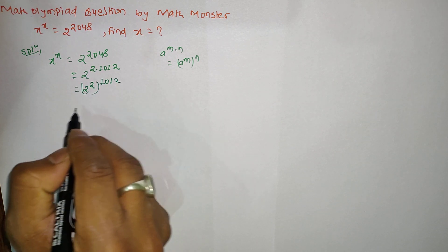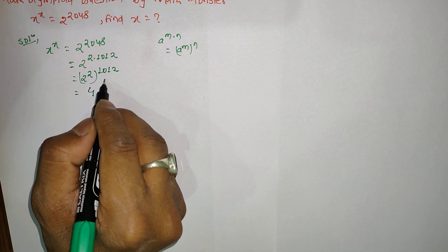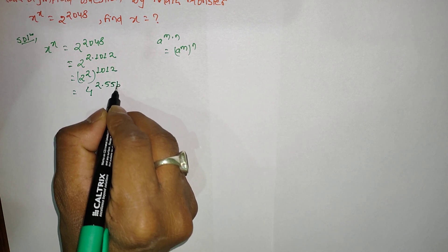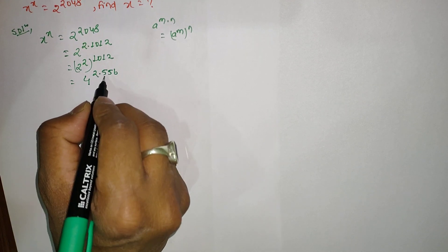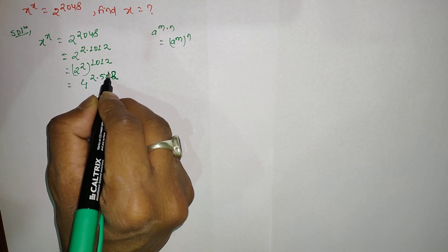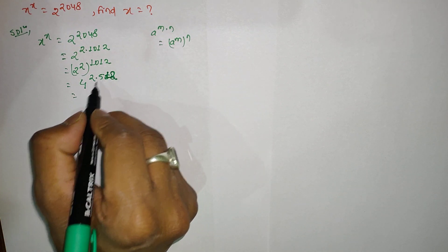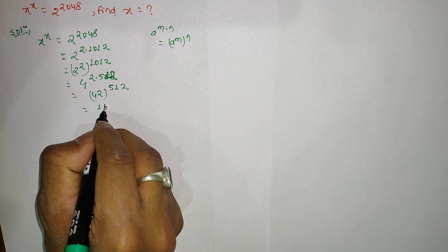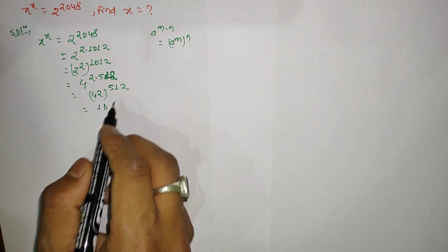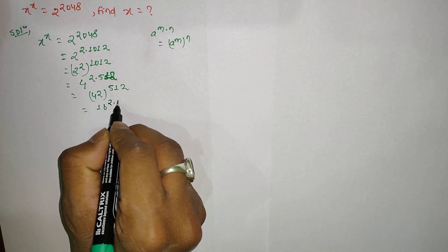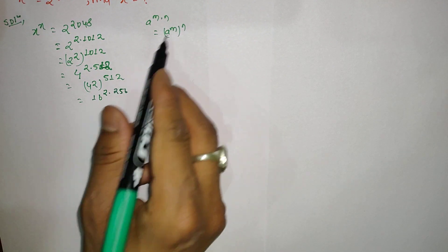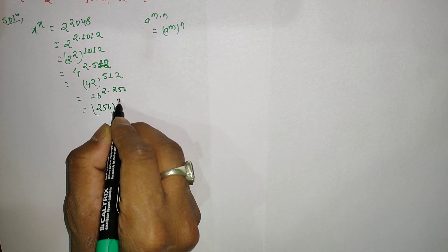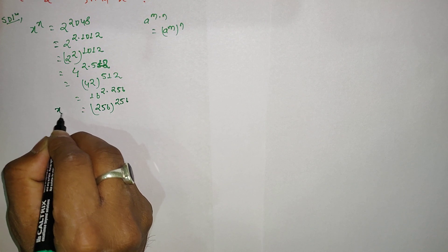Now 1024 can be written as 2 × 512, so we apply the rule again: 4^(2 × 512) becomes (4^2)^512, which is 16^512. Then 512 can be written as 2 × 256, so applying the rule once more: 16^(2 × 256) becomes (16^2)^256, which is 256^256. We can now see that both sides are in the same form.